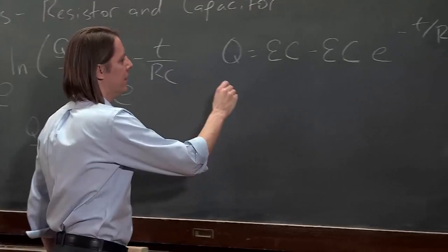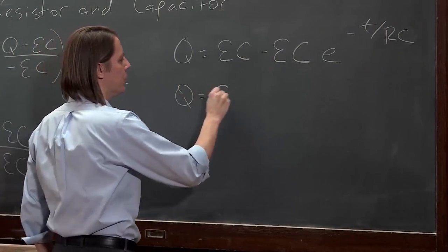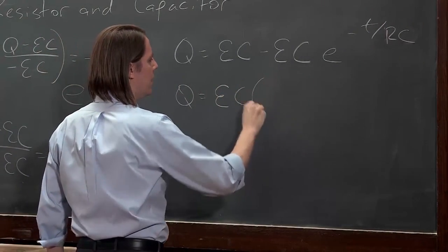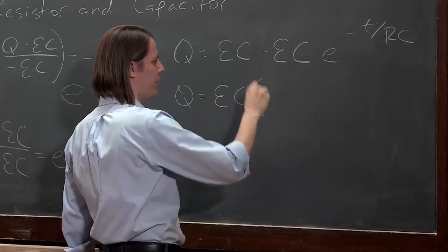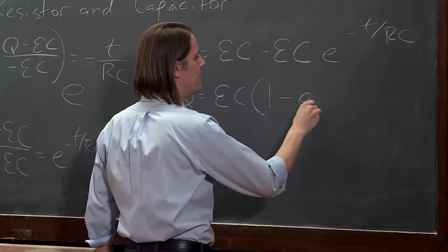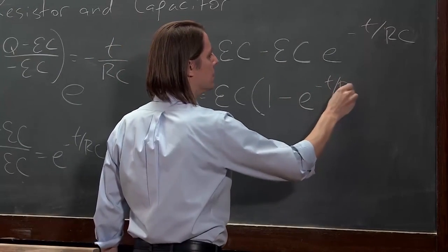We're getting there. Now let's say Q equals the EMF times C times the parentheses 1 minus E to the minus T over RC.